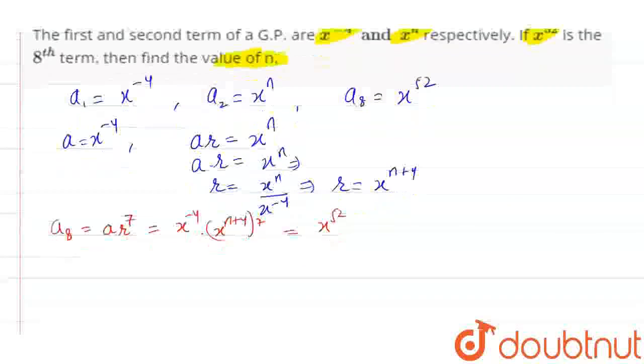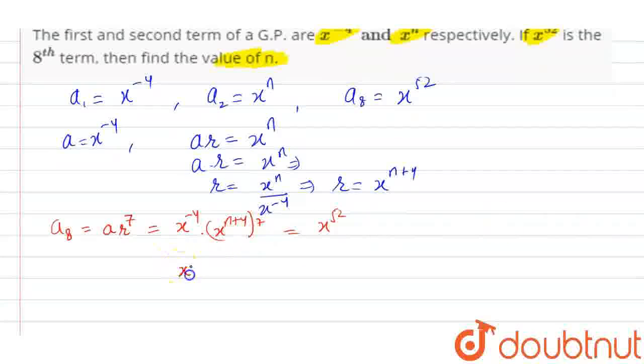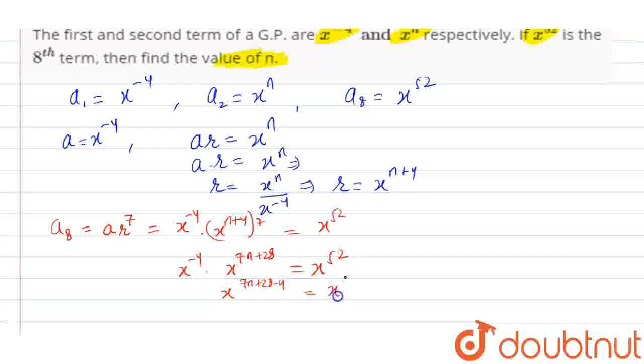Now we will solve this. x to the power minus 4 into x to the power 7n plus 28 is equal to x to the power 52. Now we will add this term: x to the power 7n plus 28 minus 4 is equal to x to the power 52.